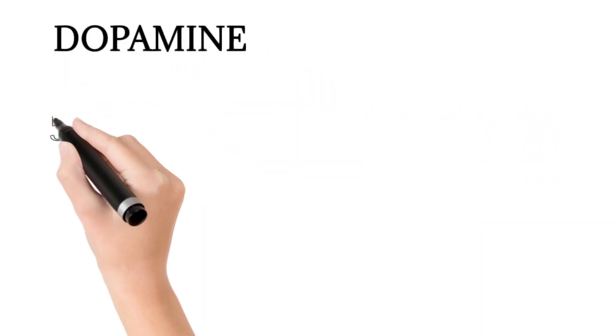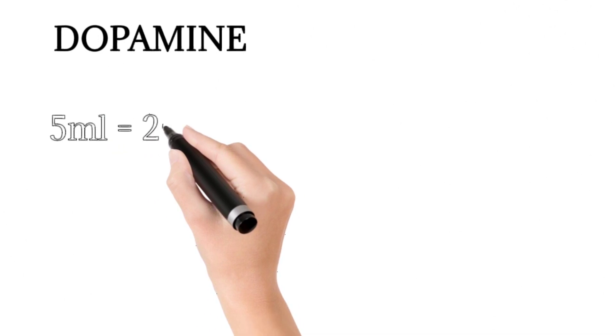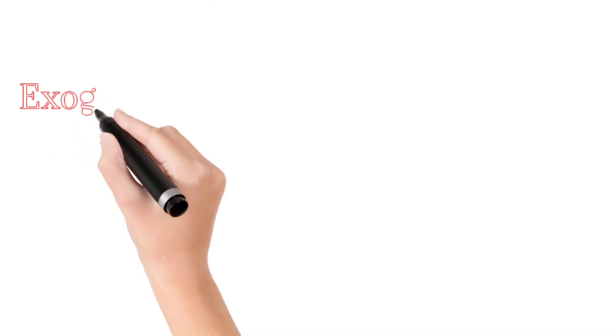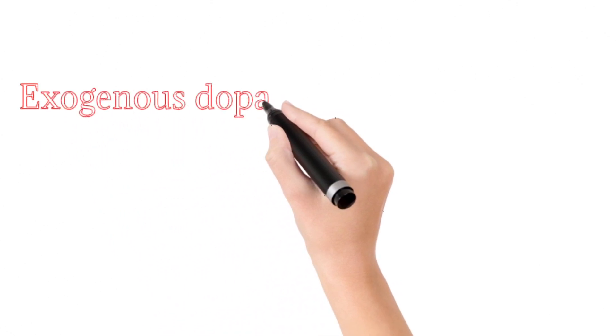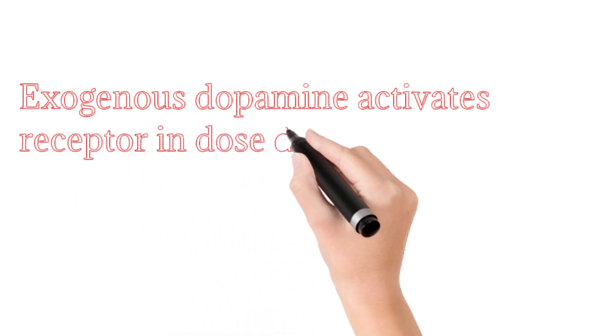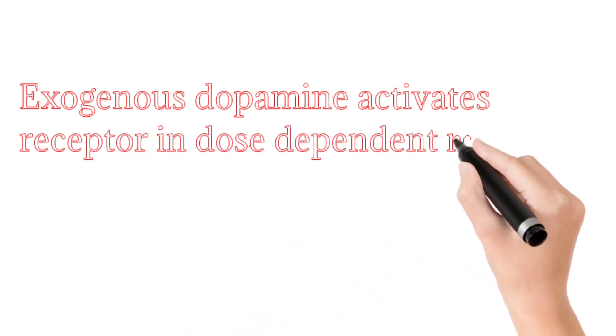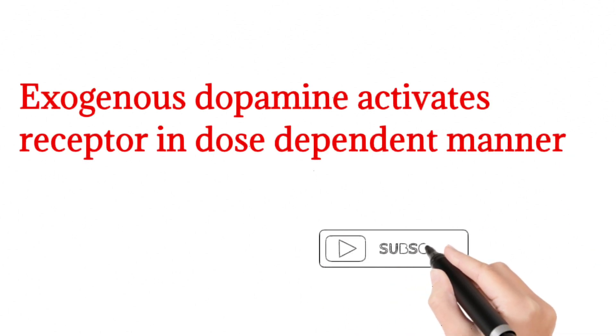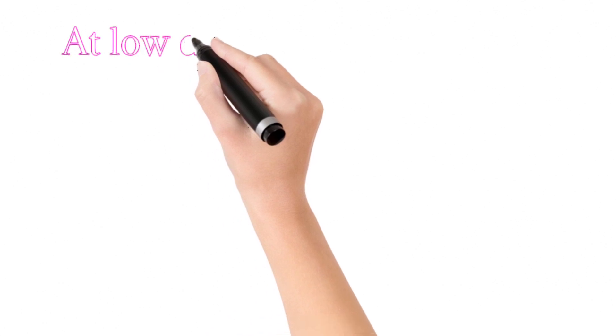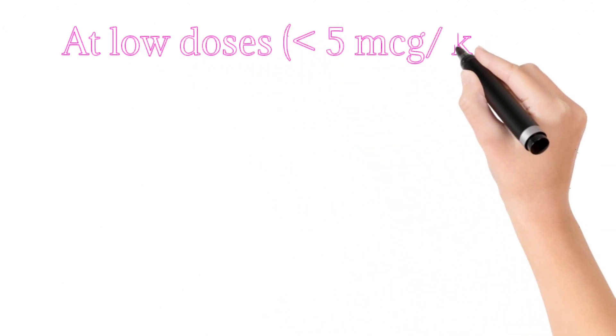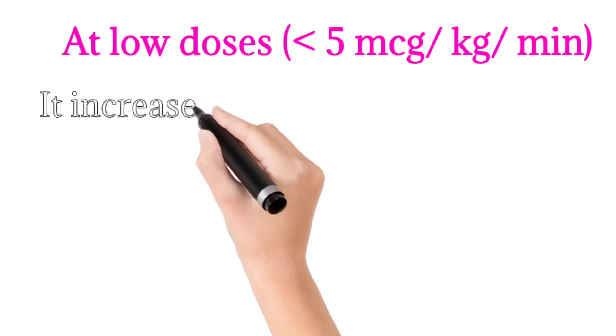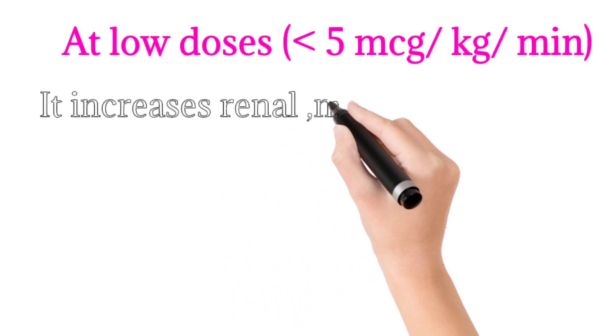First, dopamine. Dopamine comes in 5ml ampoules containing 200 milligrams. It acts in a dose-dependent manner at different receptors. At low doses, less than 5 micrograms per kilogram per minute, it increases renal blood flow, mesenteric blood flow, and coronary blood flow.